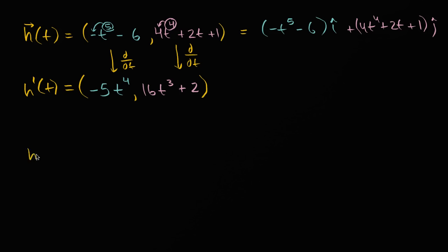So if we say h prime prime of t, what is that going to be equal to? h prime prime of t? Well, we just apply the power rule again. So four times negative five is equal to negative 20 t to the four minus one, so t to the third power. And then we have three times 16 is 48 t squared, and then the derivative of two is just zero. And so there you have it.